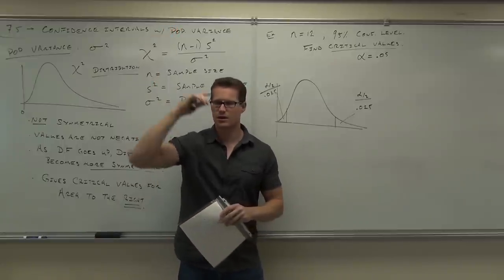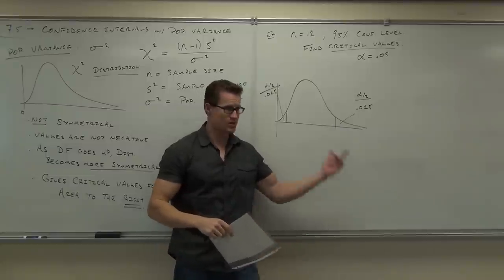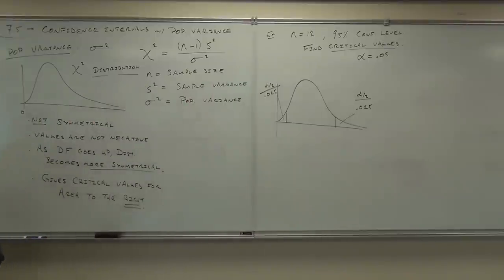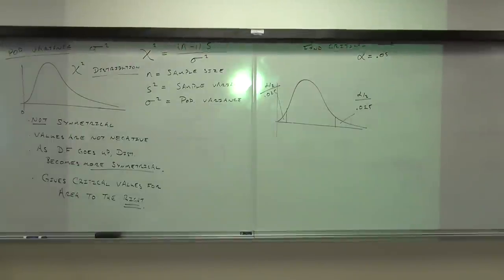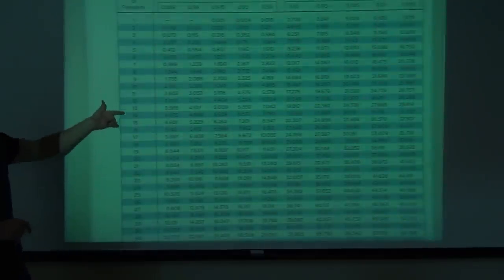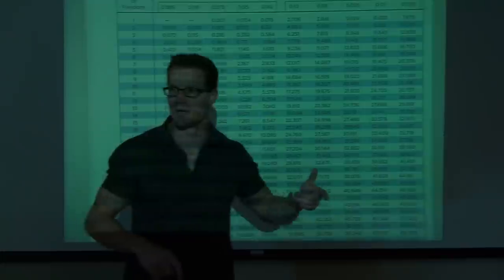You don't look this up in a z-score or a t-score — you look it up in your chi-square distribution table. Here's the table. It says the chi-square distribution at the top. Over here we see our degrees of freedom. Are you still familiar with how to find degrees of freedom? In the example I was giving you with n=12, degrees of freedom is 11.